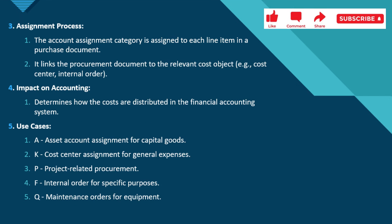Talking about the assignment process: the account assignment category is assigned to each line item in a purchasing document. It links the procurement document to the relevant cost object — for example, if you are procuring for a cost center or for an internal order, it will link the procurement document to that relevant cost object.